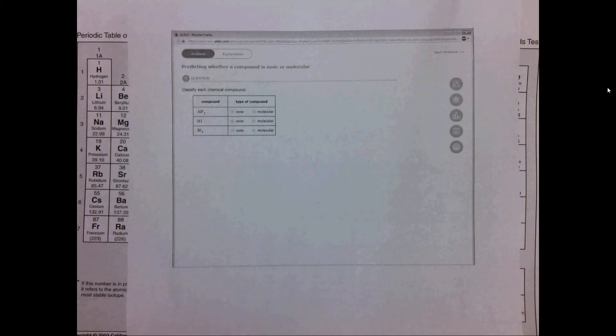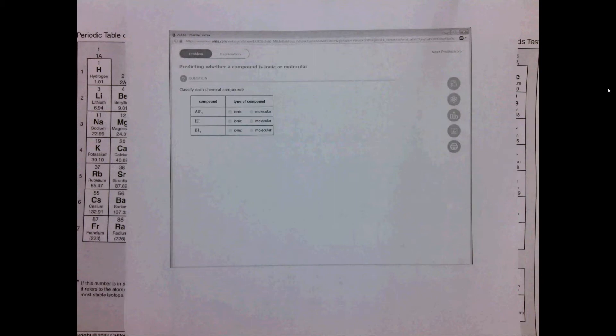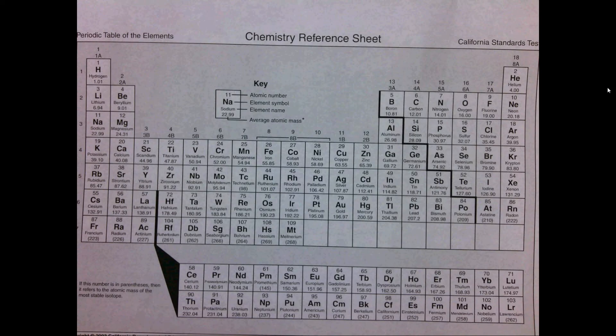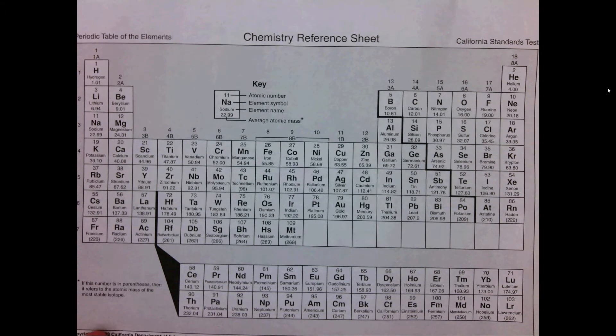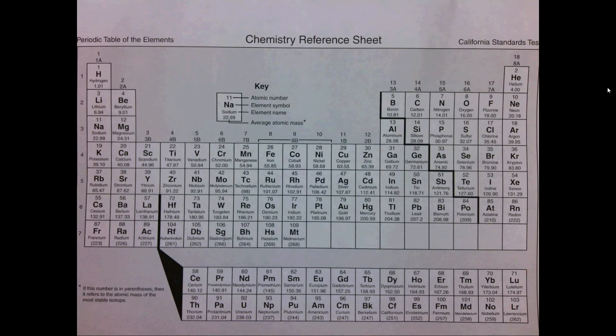In this question, we're asked to determine whether several compounds are covalent or ionic. Before we do that, we need to talk a little bit about the periodic table. In several of these chemistry videos, I'm largely skipping the theory because you'll get that in the lecture course, and skipping right to how to actually solve the problem.